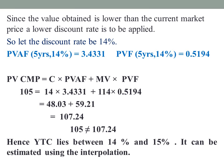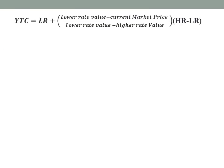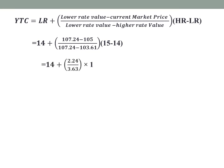Using interpolation to find the actual YTC: YTC = Lower rate + [(Lower rate value − Current market price) / (Lower rate value − Higher rate value)] × (Higher rate − Lower rate). That is: YTC = 14 + [2.24 / 3.63] × 1 = 14 + 0.62 = 14.62%.